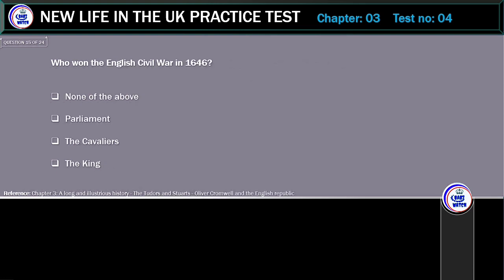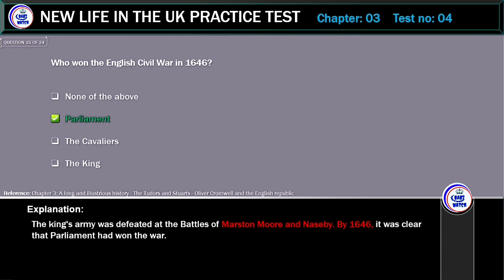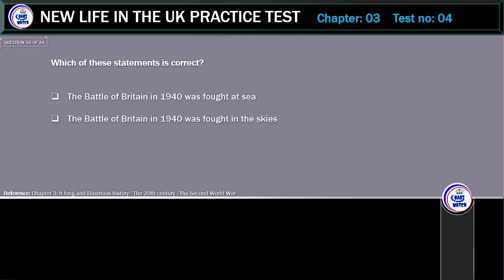Who won the English Civil War in 1646? Options: none of the above, Parliament, the Cavaliers, or the King. The correct answer is Parliament. The King's army was defeated at the Battles of Marston Moor and Naseby. By 1646, it was clear that Parliament had won the war.